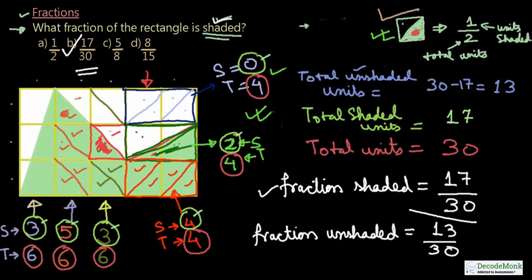Such questions may seem very difficult for untrained students, but trained students can figure these out fast by going column wise or row wise to find total shaded and unshaded units. It is always suggested to break down each small square into 2 triangular subunits, which helps you infer the total number of units shaded or unshaded. Keep practicing such questions. Thank you.